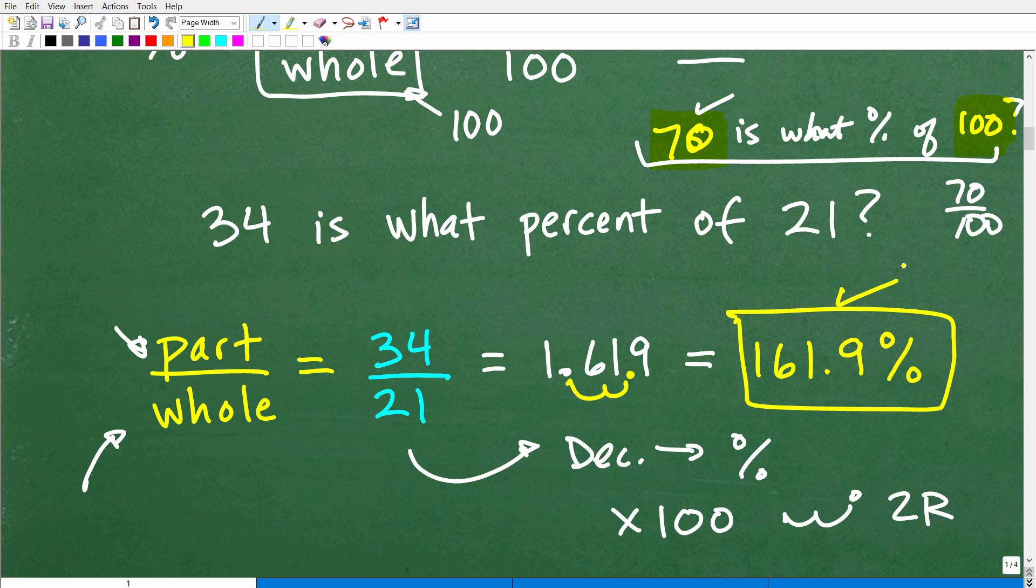And this particular problem, again, is a little bit confusing because we're dealing with a percentage that's larger than 100. Okay. So here, 70 out of 100 is 70%.